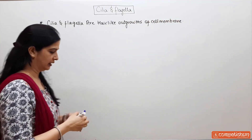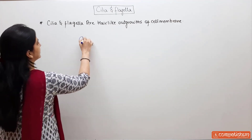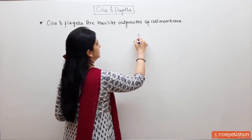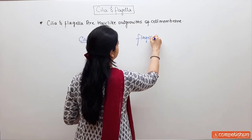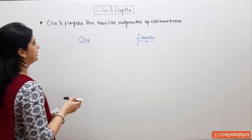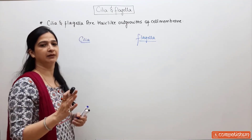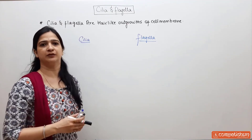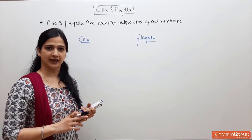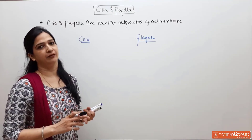Now, in order to compare them, on one side we will write cilia and on the other side we will write flagella. We will compare only four characters: size, number, movement, and functions.